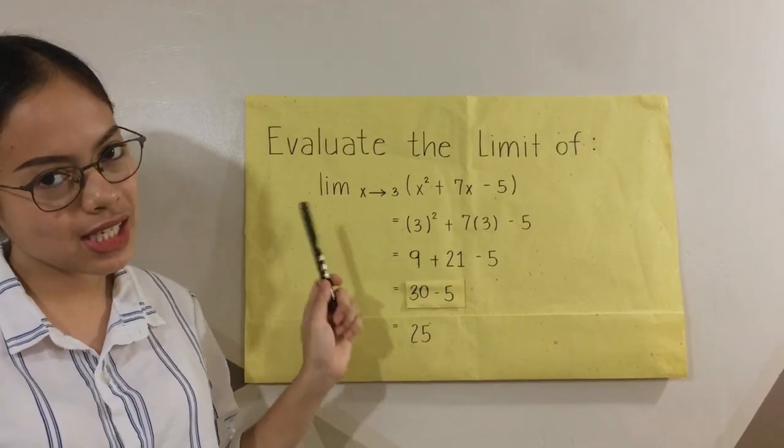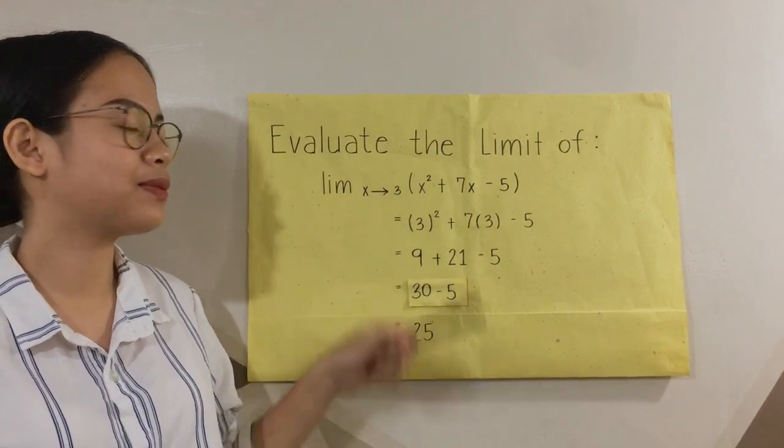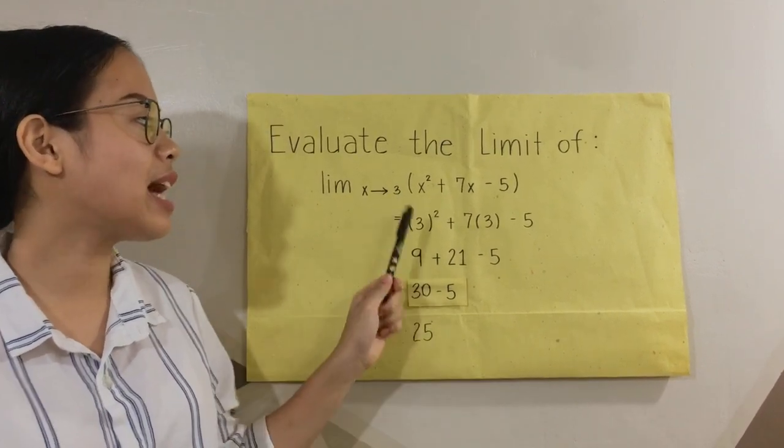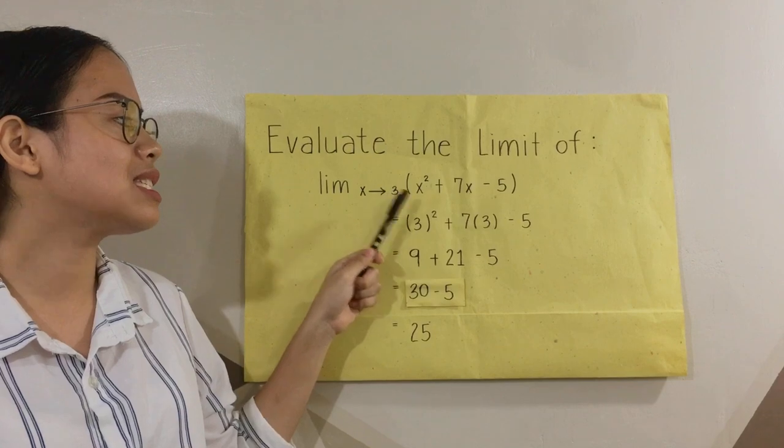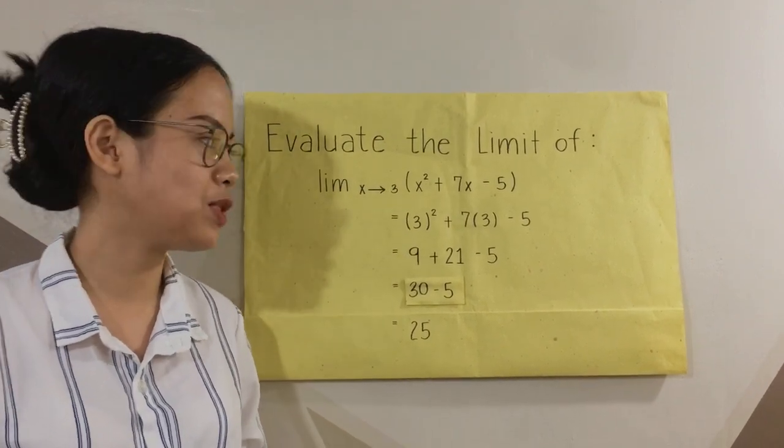So as it's stated here, x approaches 3. So we assume that every value of x equals 3. Now, let's substitute it.